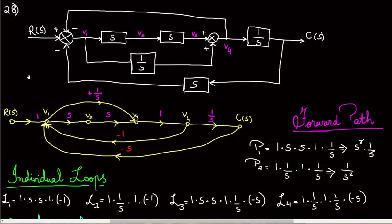Hello everyone. I'll be going over problem 28 from homework 5. The problem gives a block diagram and you have to find the transfer function for this block diagram. You can solve it using the reduction method, or you can also solve it using Mason's rule. I'm going to be showing the solution using Mason's rule, and for that you're going to need a flow chart diagram.